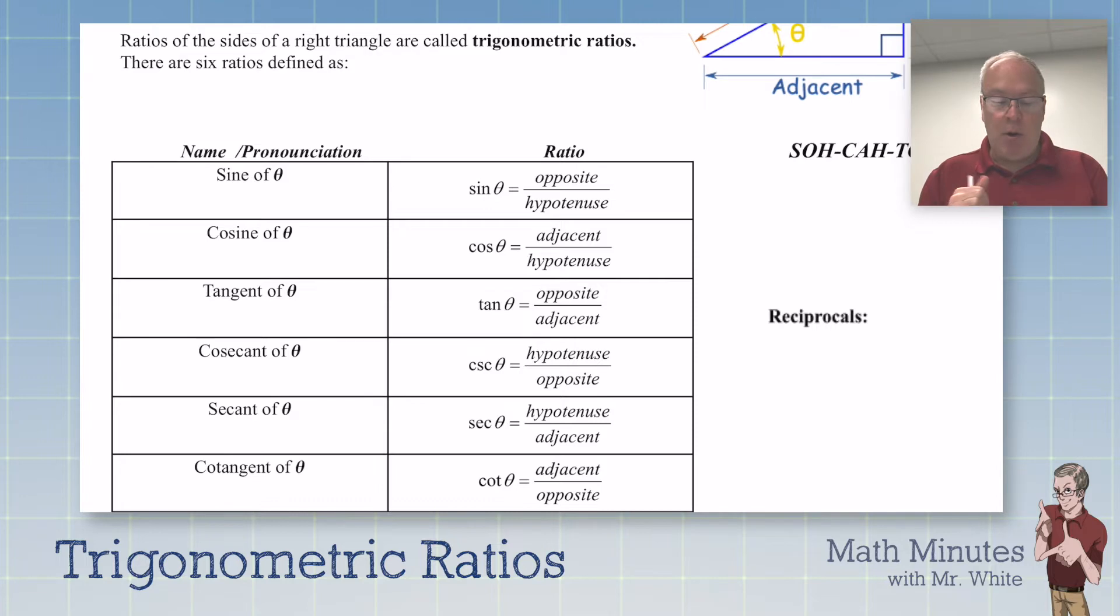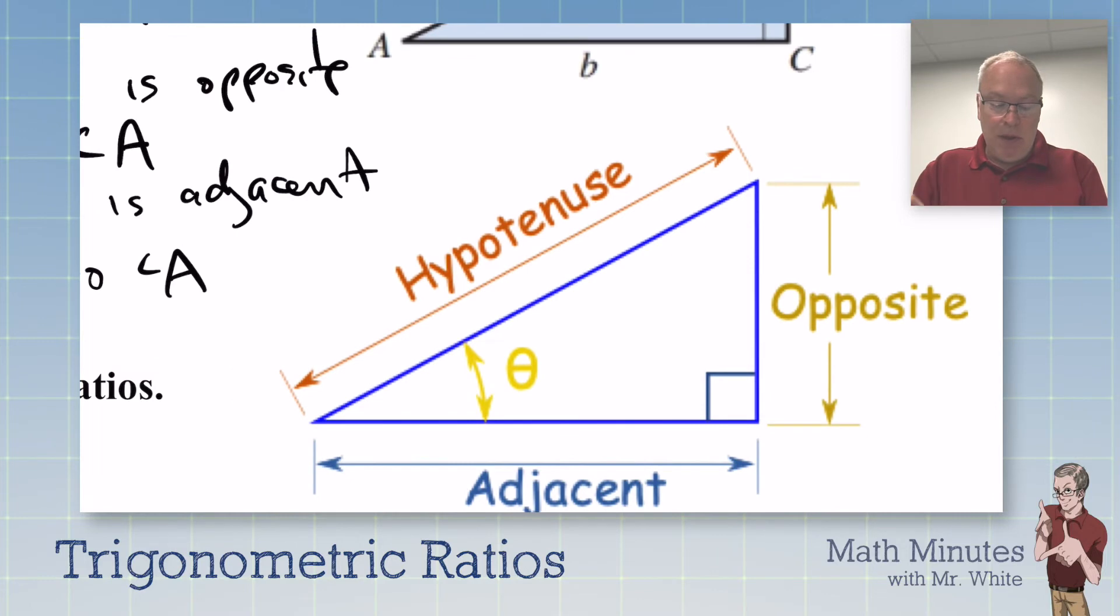You can see all the fractions that we create using the different combinations of sides. Sine is the ratio of the opposite side length to the hypotenuse length. So sine of theta is the opposite length, whatever it is, maybe 5, divided by the hypotenuse, whatever it is, maybe 10. So we would say the sine is 5 over 10 in my simple example there, or 1 half. So these trig functions are ratios of sides.